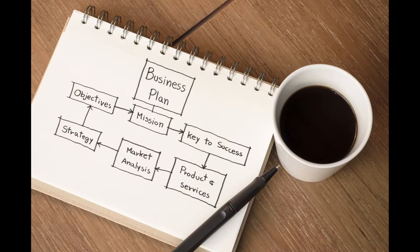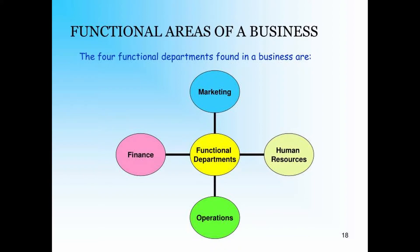The first step in your strategic planning is building the business strategy. This is where you'll spend the majority of your time and effort for this planning task. You will consider all four functional areas and you'll consider many variables within each of those areas.